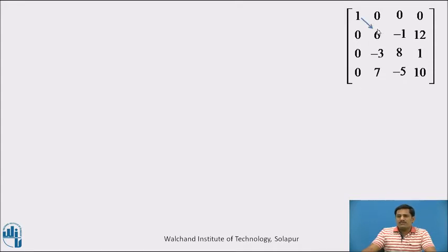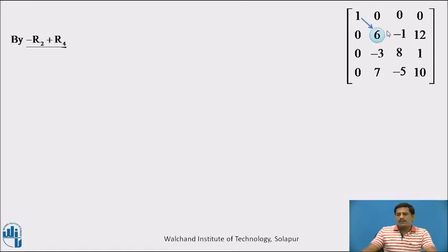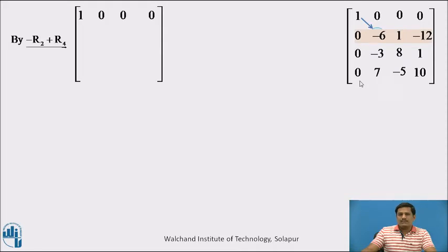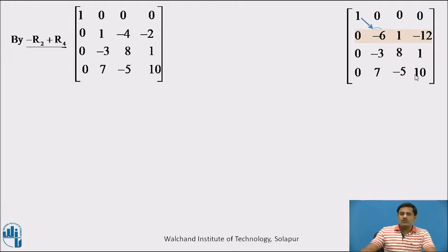Now we move towards the next diagonal entry which is 6. We search for a 1 in the second column — there are no ones present. But I will multiply row number 2 by minus 1 and add it to row number 4: that gives minus 6 and 7, so the addition becomes 1. Performing minus R2 plus R4: multiply row 2 by minus 1 to get these entries, then adding to row 4 gives 0 plus 0 is 0, minus 6 plus 7 is 1, and 1 plus minus 5 is minus 4.